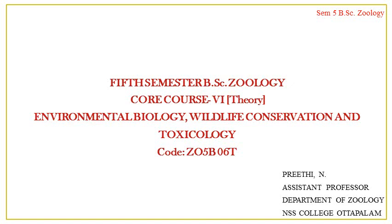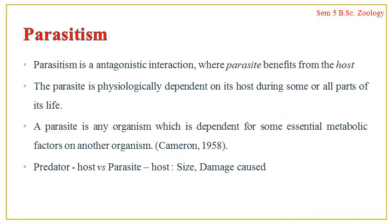This is the last presentation under population interactions, dealing with the last population interaction. It is a negative interspecific population interaction. In this presentation we will be dealing with parasitism — the different kinds of parasitism and parasitic adaptations. Parasitism is a kind of negative, antagonistic interaction between two species where one individual is benefited and the other is harmed. The one which is benefited is referred to as the parasite.